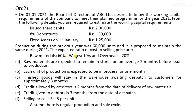Raw materials are expected to remain in stores on an average of 2 months before being issued to production. Each unit of production is expected to be in process for one month. The amount of work-in-progress is expected to be equivalent to one month's production.